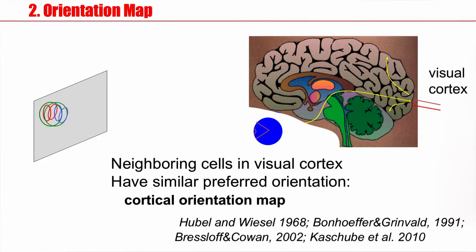Now, analogously to what we have seen before, neighboring cells have different preferred spatial location of the receptive field. We now have another map, the cortical orientation map, which says neighboring cells in visual cortex have similar preferred orientation.